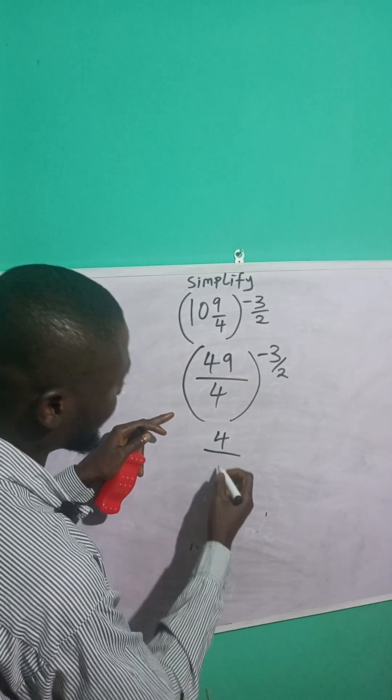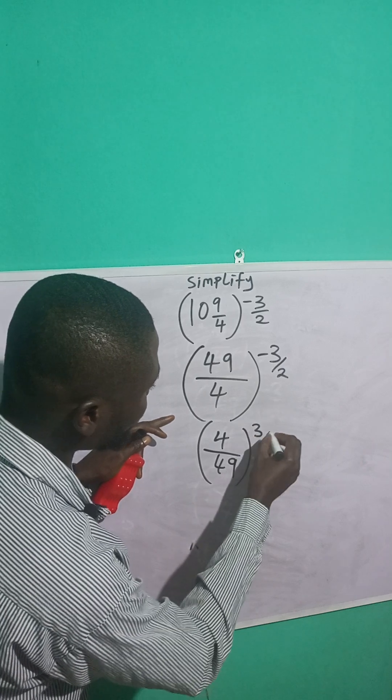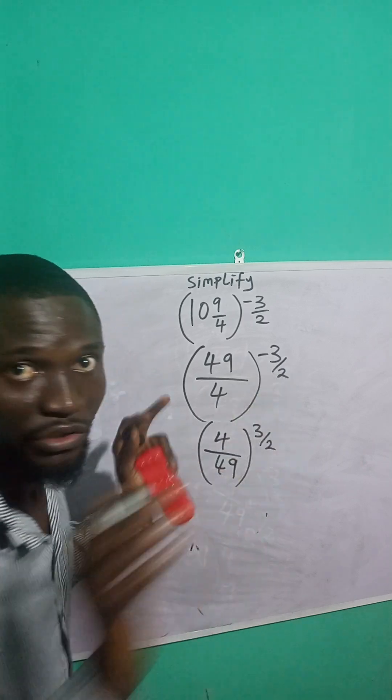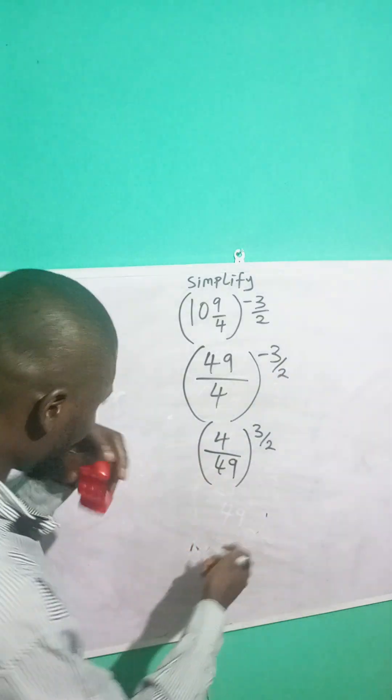it means that you turn this fraction upside down to be what? 4 over what? 49. Raise the power of what? 3 over 2. The negative sign goes away. I've applied it here. When I apply it, I take the inverse by turning it upside down.